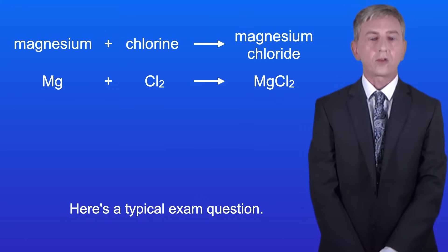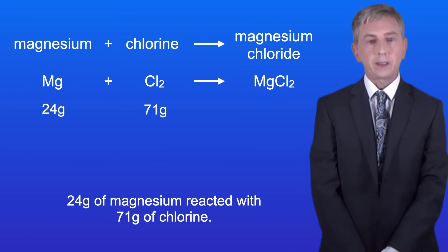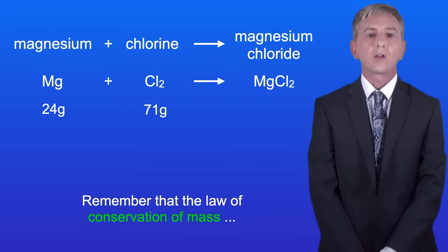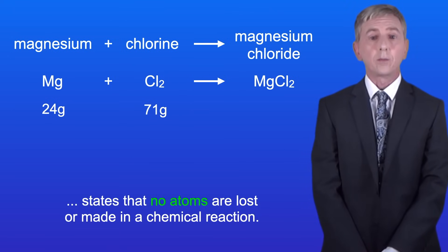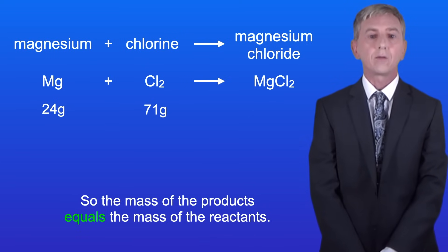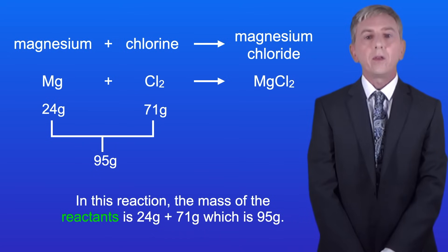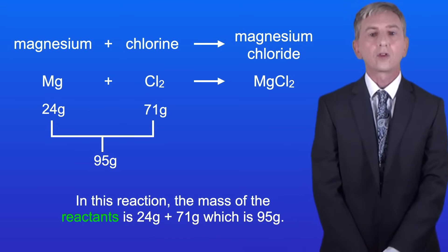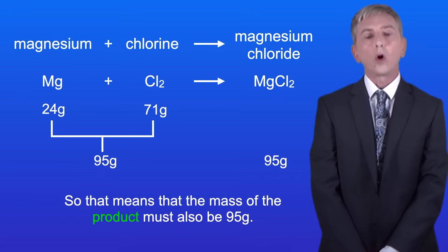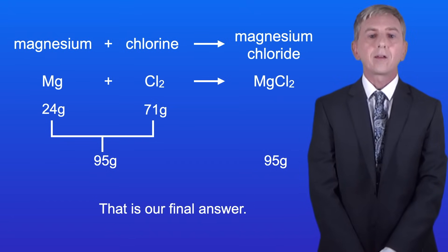Here's a typical exam question. 24 grams of magnesium reacted with 71 grams of chlorine. Calculate the mass of magnesium chloride produced. Remember that the law of conservation of mass states that no atoms are lost or made in a chemical reaction, so the mass of the products equals the mass of the reactants. The mass of the reactants is 24 grams plus 71 grams which is 95 grams. So the mass of the products must also be 95 grams, and that's our final answer.